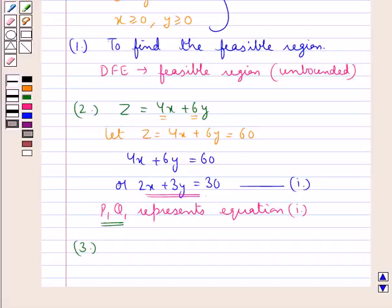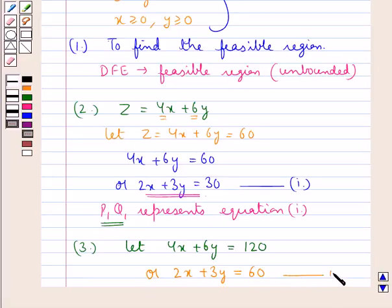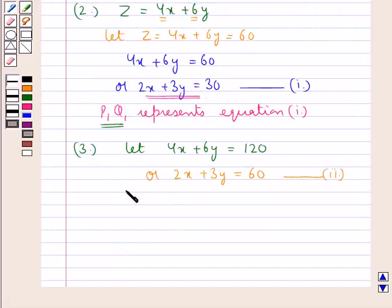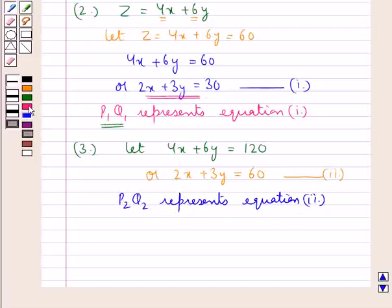To draw another line parallel to p1q1 we take, let the objective function 4x plus 6y be equal to a constant say 120. Or this equation could be written as 2x plus 3y is equal to 60. Now we will graph this equation and let this equation be equation number 2. We have obtained a line p2q2. The line p2q2 represents equation 2 and is drawn parallel to the line p1q1.